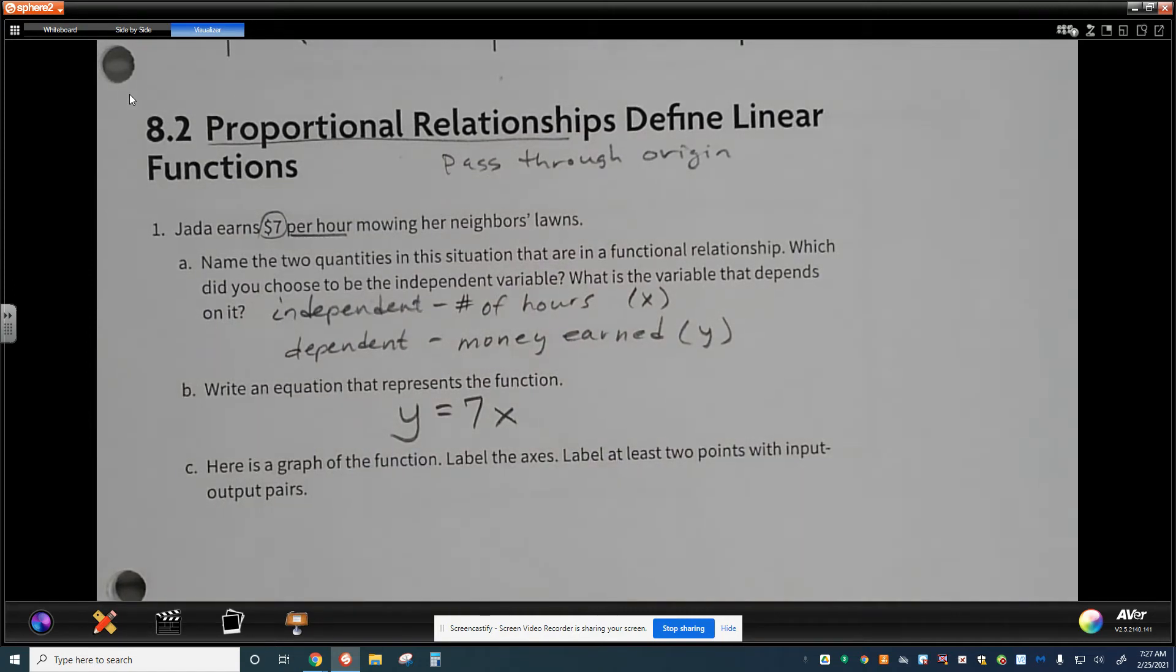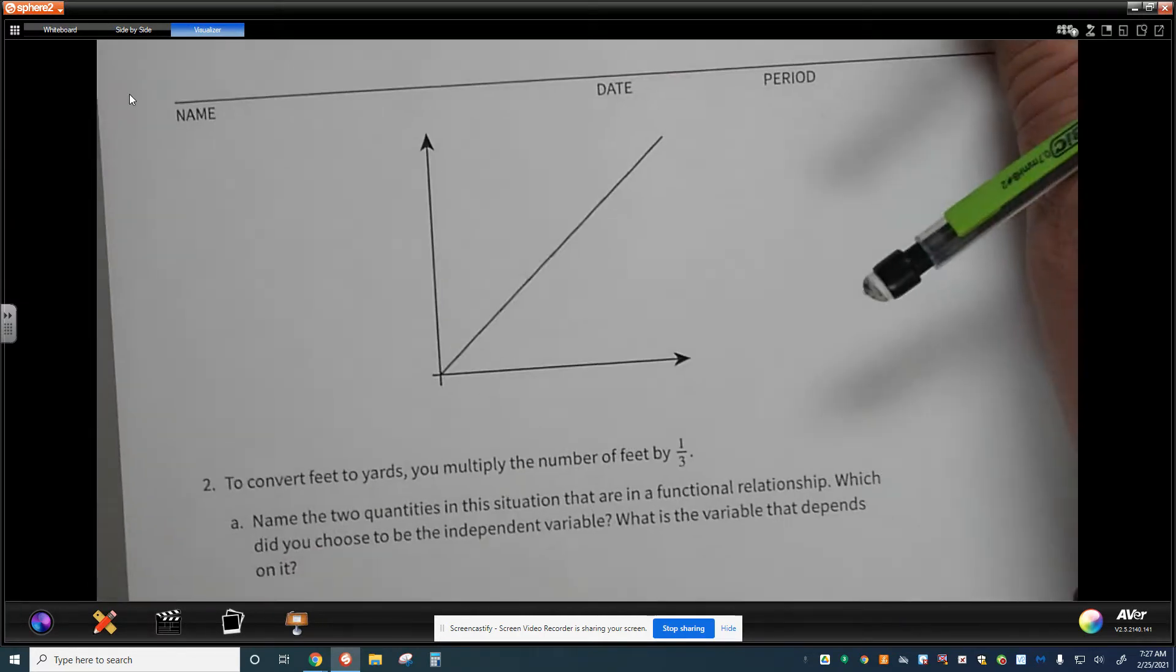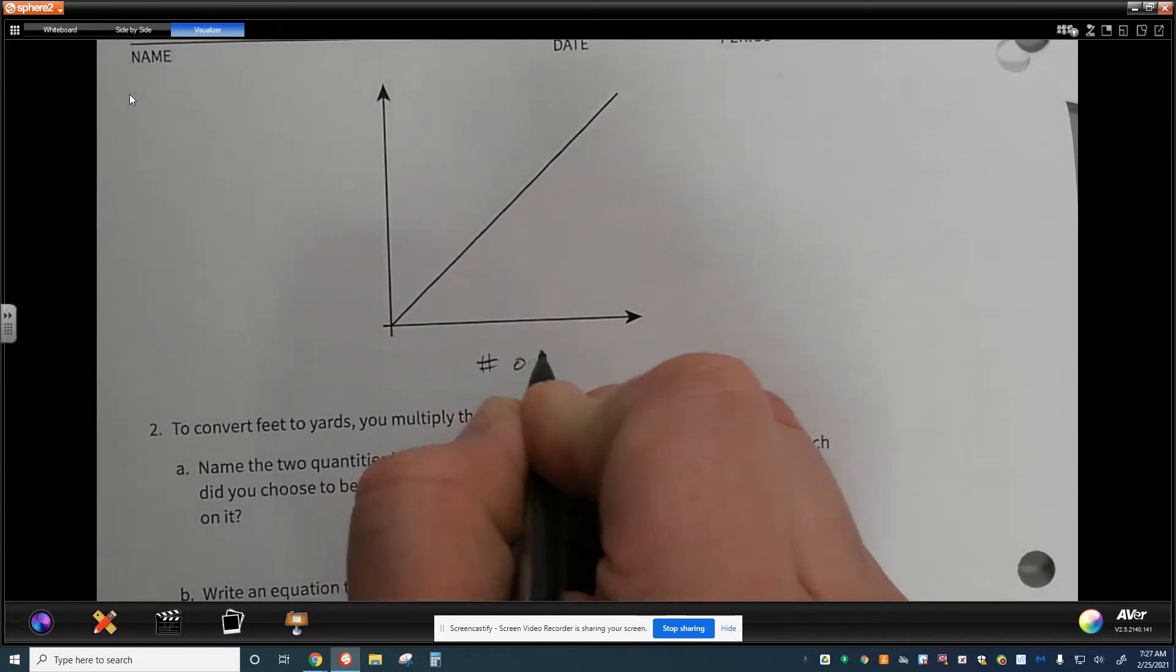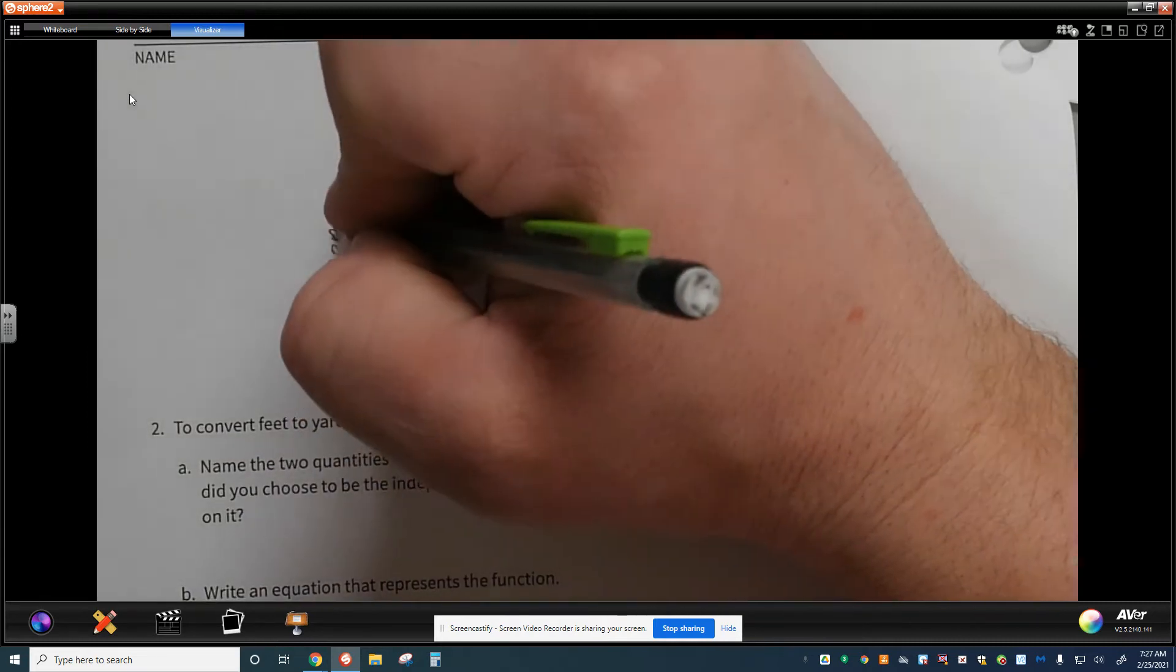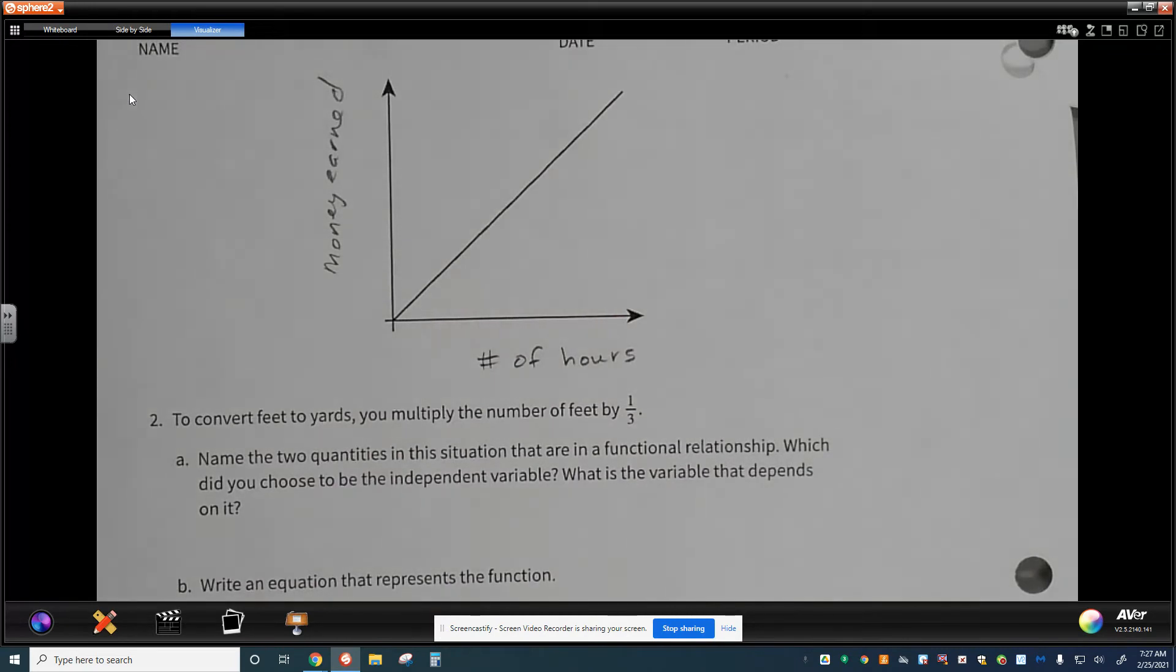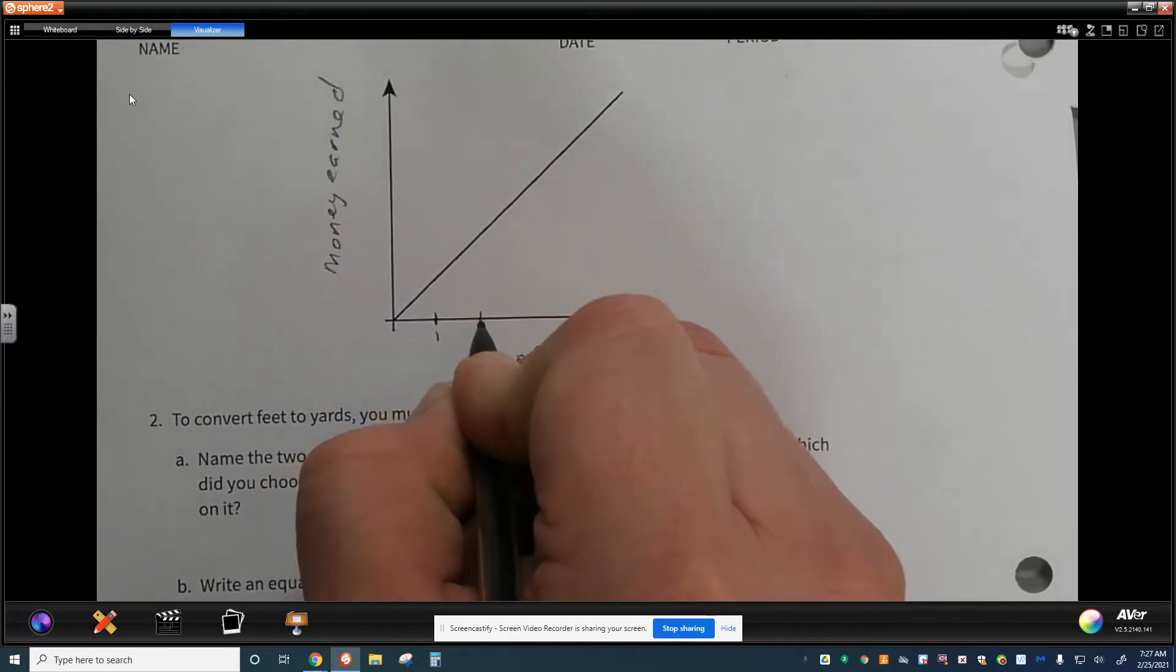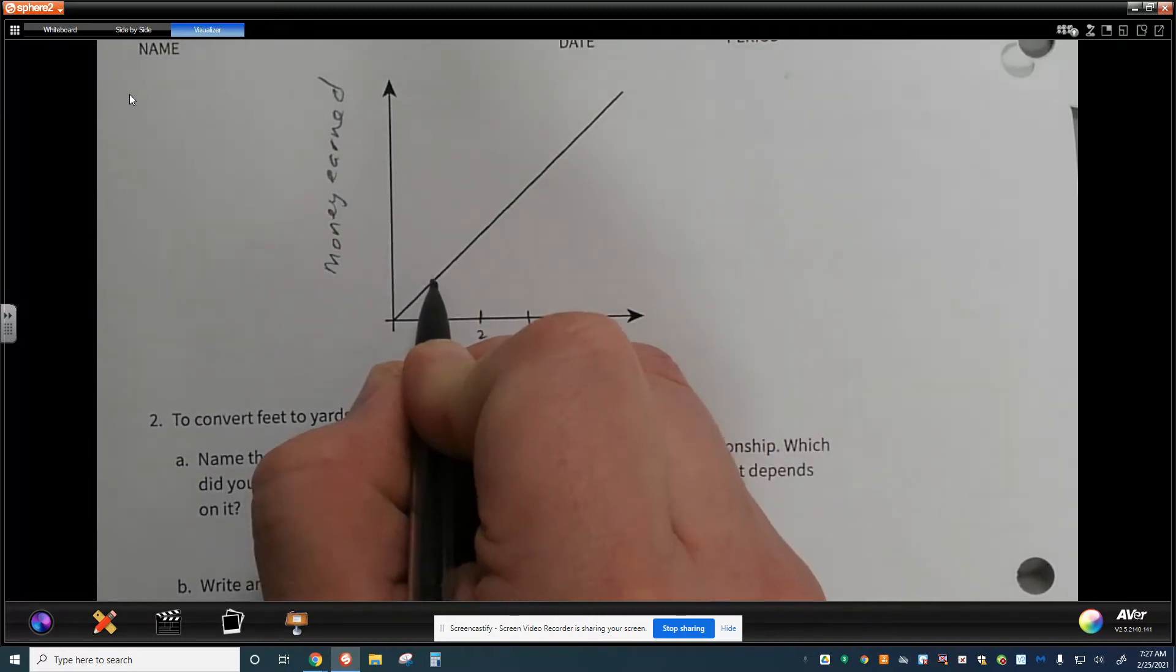On the next page, when we look at this, there's a graph of a function. We're going to label the axes and label at least two points with input-output pairs. So we look at this graph here, and we would take our independent value, the number of hours. And over here, we would talk about the money earned. Now, because of where this line is, I have to think about how I'm going to write my intervals here. And so what I do with it is I just really need to think about if this is one hour, this is two hours, this is three hours.